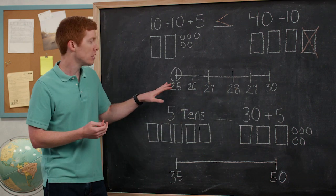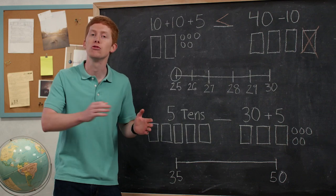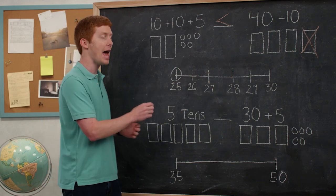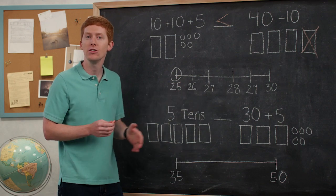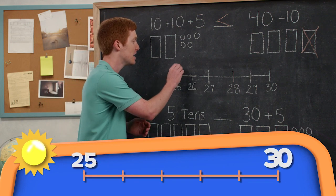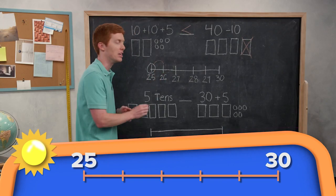And we could start at 25, maybe on a number line, you could draw this out and say, well, how do I get to 30? Well, I know that I've got to add and I can add by ones to get there. Or you might be able to add by other numbers too, but let's start with ones and say, if I add one, I get to 26.